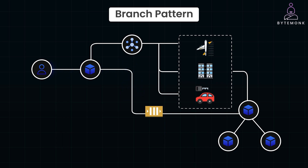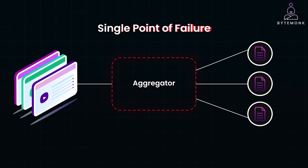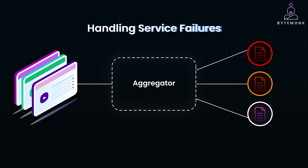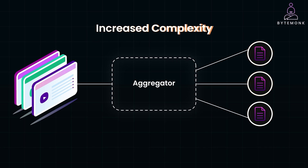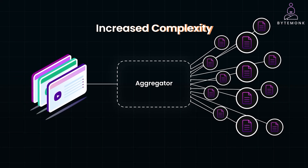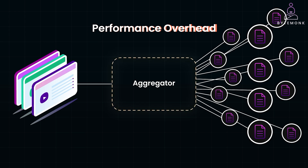While the aggregator pattern offers significant benefits, it's important to be aware of potential challenges. The aggregator service becomes critical to the system — if it fails, it can disrupt the entire operation, so implementing redundancies and failover mechanisms is essential. If one of the underlying services fails or responds slowly, it can affect the aggregator's ability to provide timely and complete responses. Strategies like timeouts, retries, and fallback responses can help mitigate these issues. As the number of services and complexity of aggregator logic grow, maintaining and scaling the aggregator can become more challenging, so proper design and monitoring are key. Finally, aggregating multiple service responses can introduce latency, especially in complex scenarios, so optimizing service calls and processing logic is necessary to ensure acceptable performance.